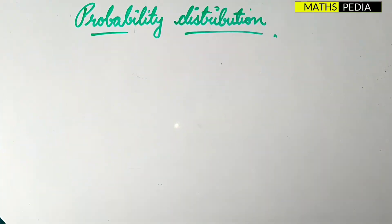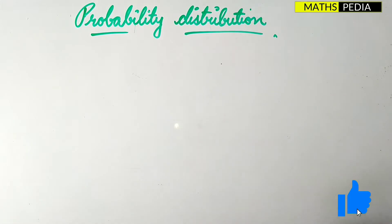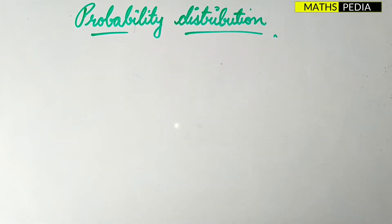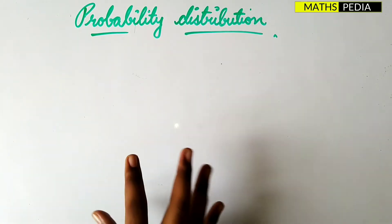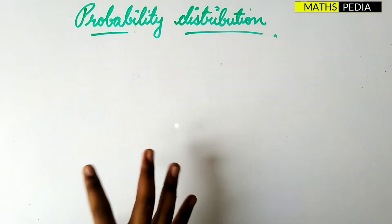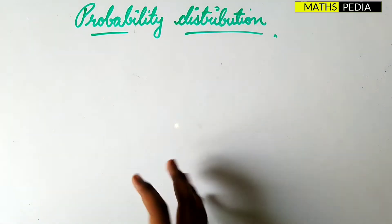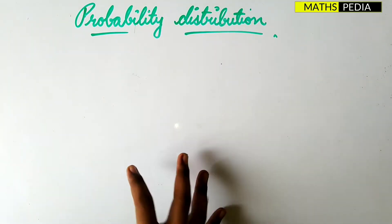In this video we will be discussing probability distribution, which is an important unit. We will cover an introduction to experiment, sample space, random variable, and discrete as well as continuous probability distribution formulas. The next video will solve problems based on discrete and continuous probability distribution.